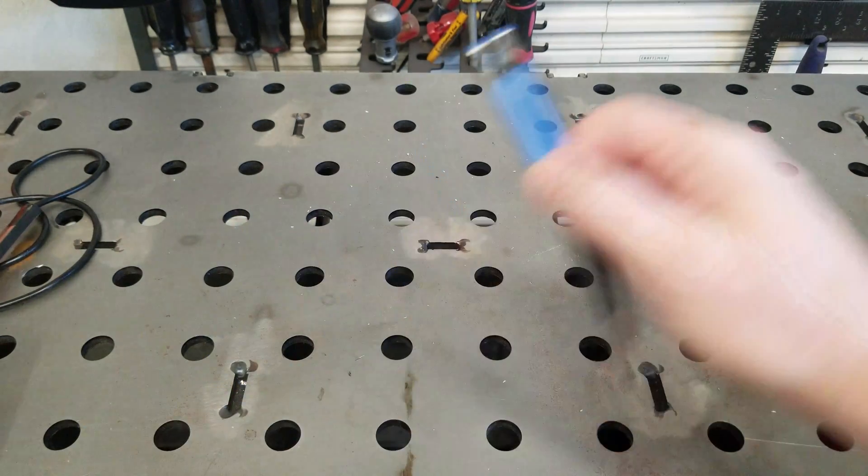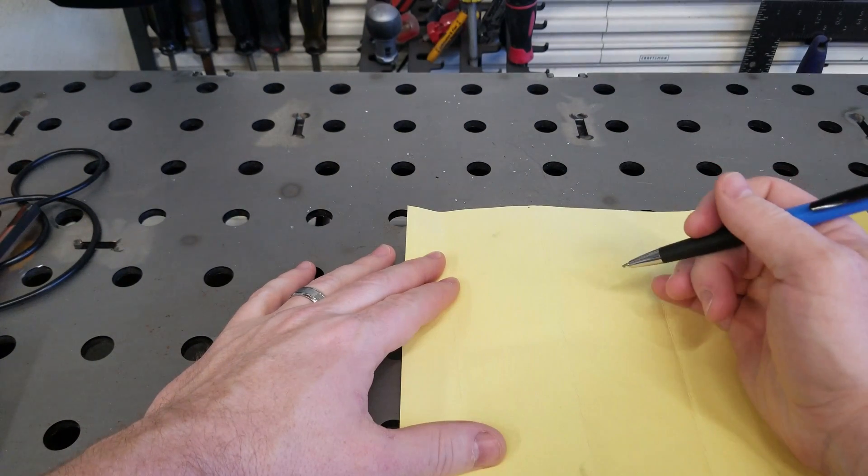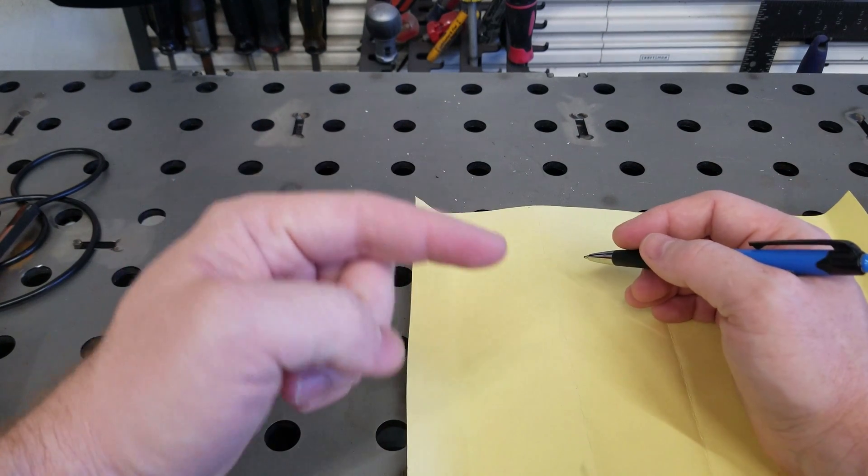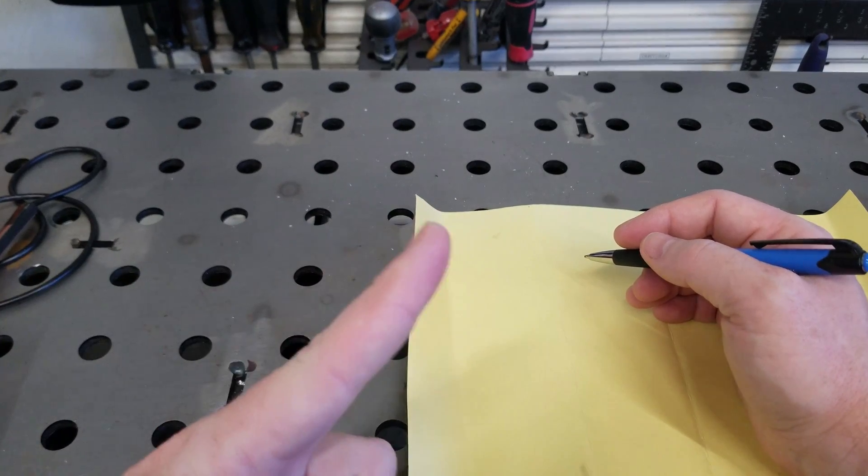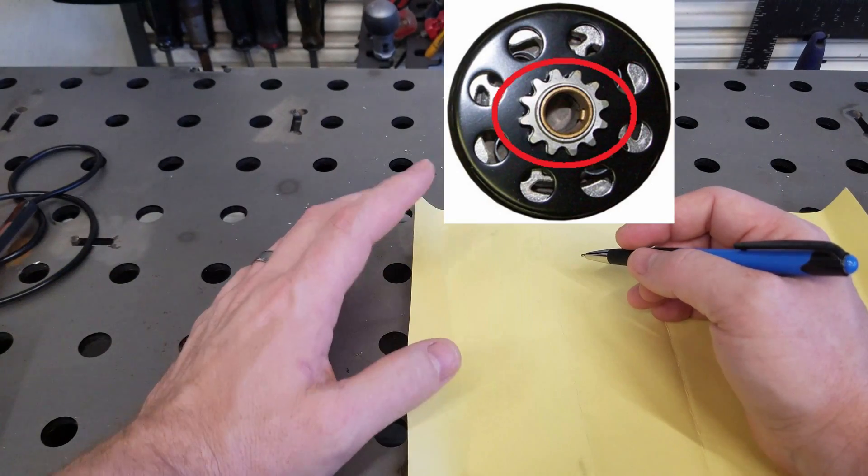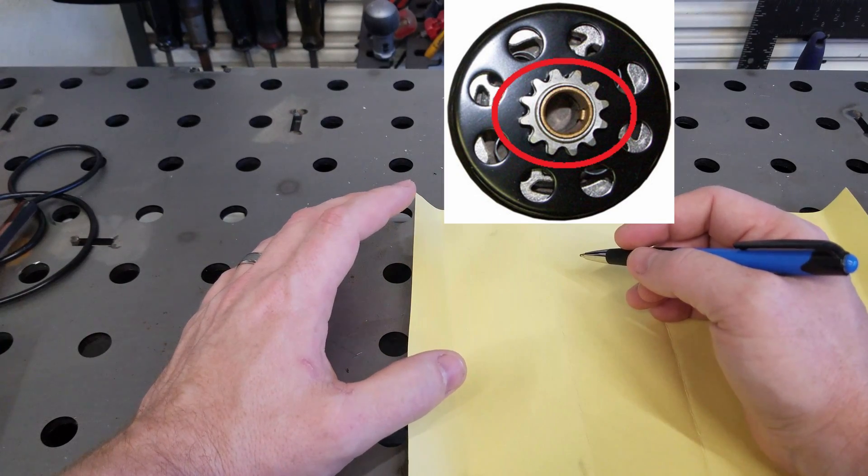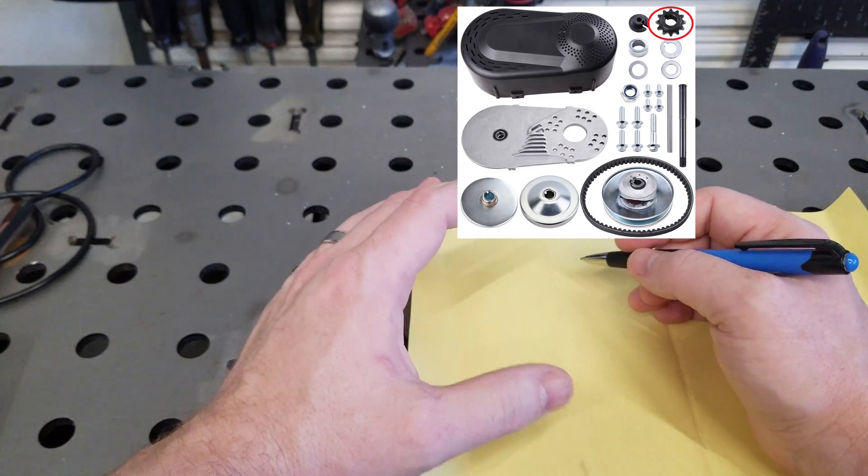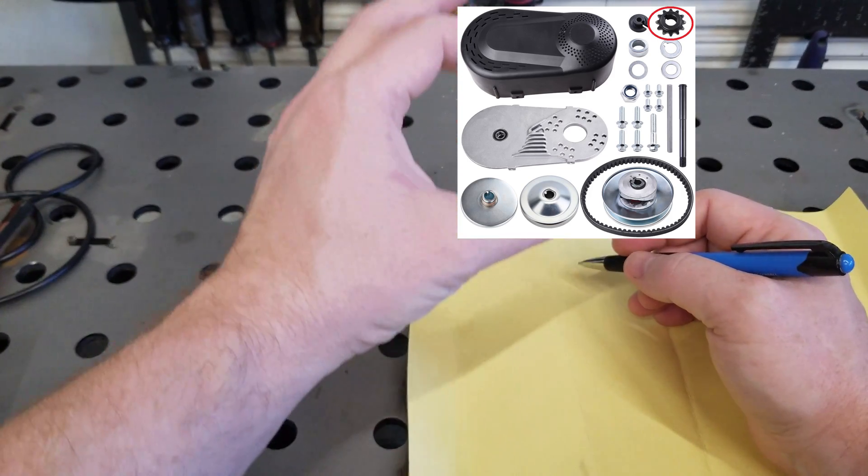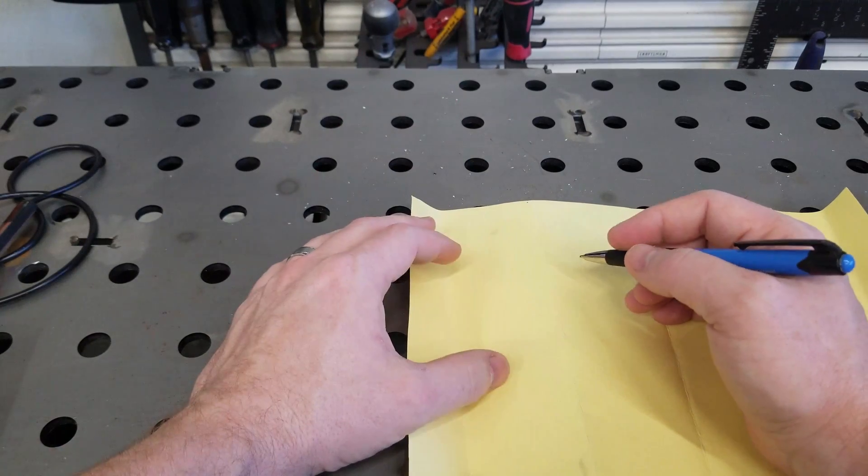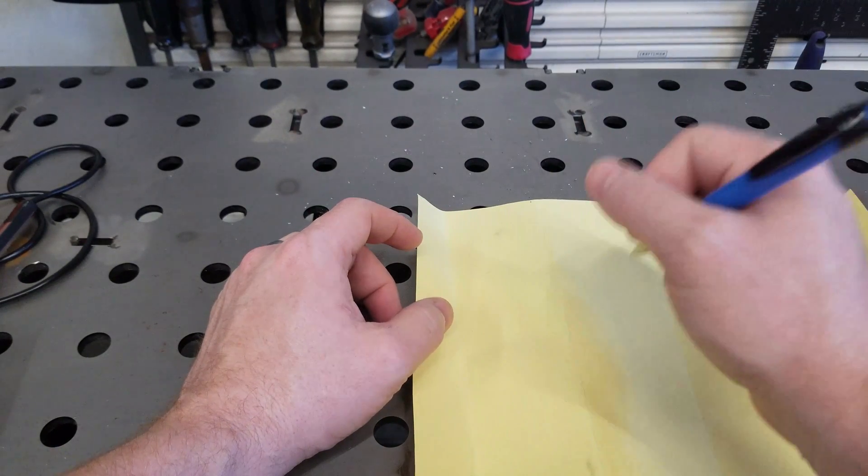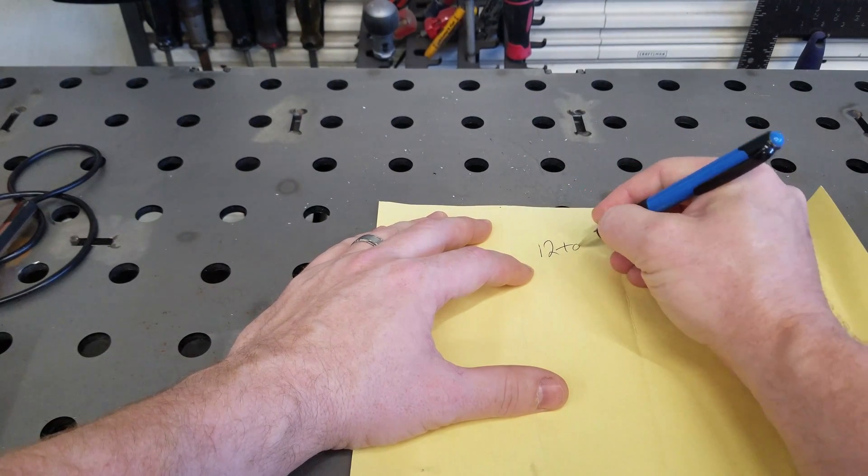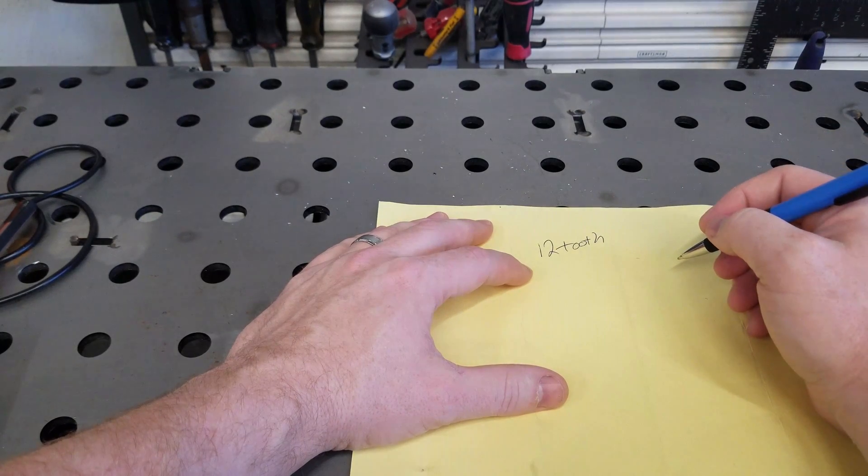So to start, get yourself a piece of paper. The first number we need to know is the number of teeth on whether it's a clutch or torque converter, the drive sprocket. So the small sprocket that the chain is attached to. And we'll use our mini bike project as an example. Ours has a 12 tooth sprocket on our torque converter.